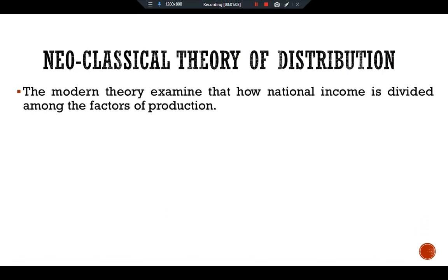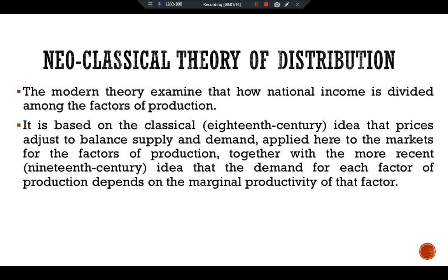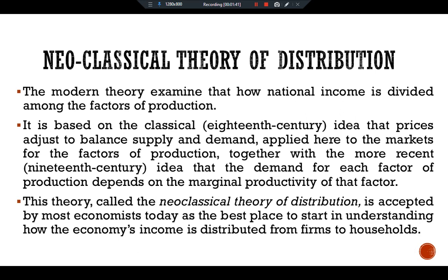We are starting our discussion with the new classical theory of distribution. The modern theory examines how national income is divided among the factors of production. It is based on the classical idea from the 18th century that price adjusts to balance demand and supply — applied here to the markets for factors of production — together with the 19th century idea that the demand for each factor depends on its marginal productivity. This theory, called the new classical theory of distribution, is accepted by most economists today as the best place to start in understanding how the economy's income is distributed from firms to households.